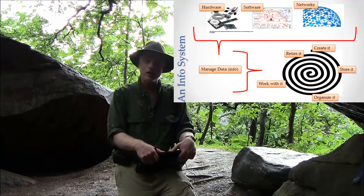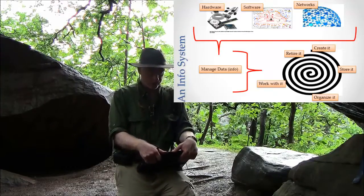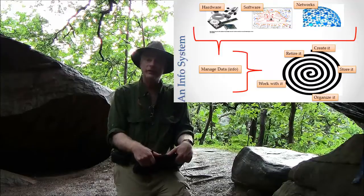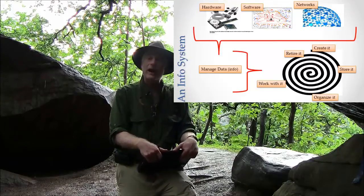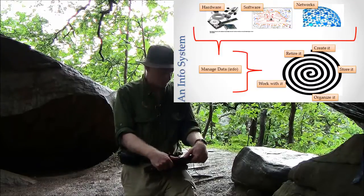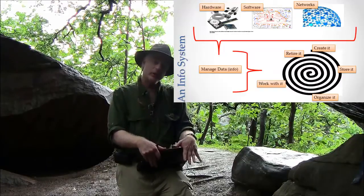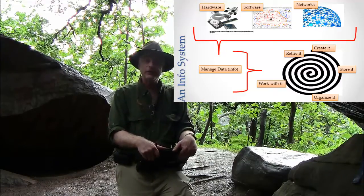And modern information systems really are a combination of hardware, software, networks, all working together to allow you to manage data and give you some sort of features. So let me talk about those two things in turn. First of all, features.